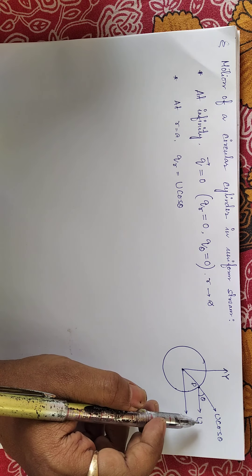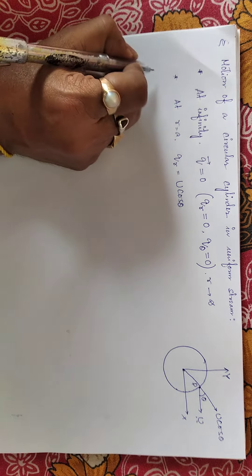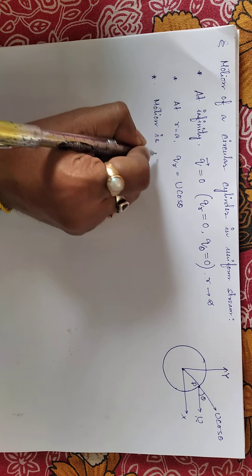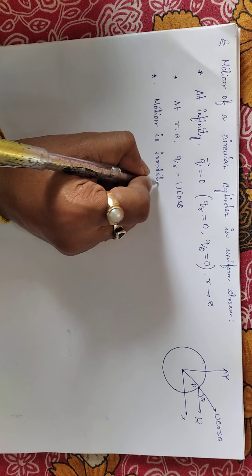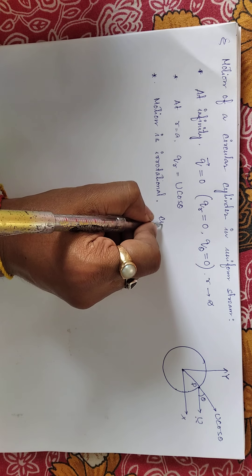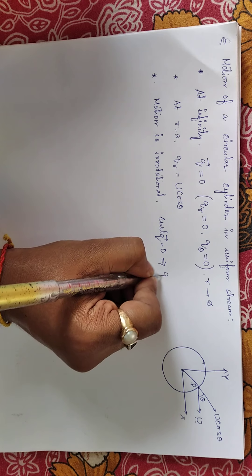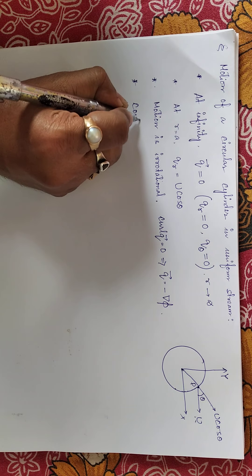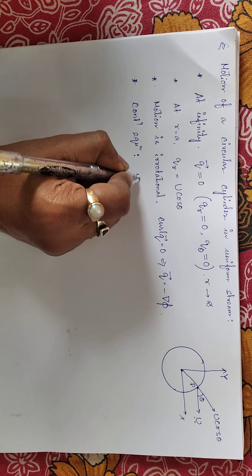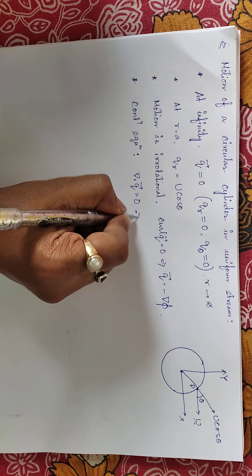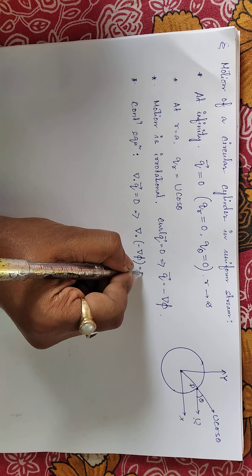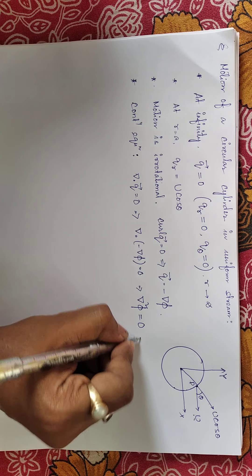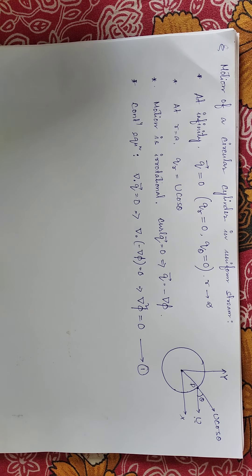The fluid is moving along this direction, so we take the component of this velocity along the radial direction. Another assumption is that the motion is irrotational. If the motion is irrotational, then curl of q vector equals zero, or q bar equals minus gradient of phi. From the continuity equation, divergence of the velocity vector is zero, which implies del squared phi equals zero. This is our equation number one, and we have to solve it to find phi.